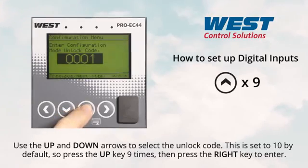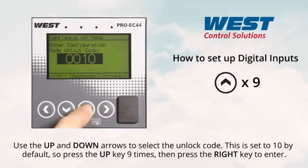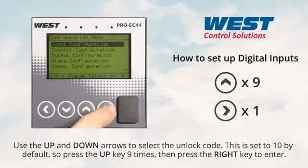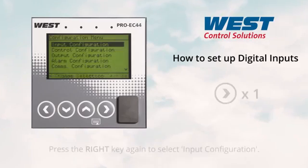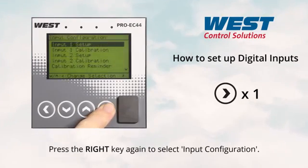Use the up and down arrows to select the unlock code. This is set to 10 by default, so press the up key nine times, then press the right key to enter. Press the right key again to select input configuration.